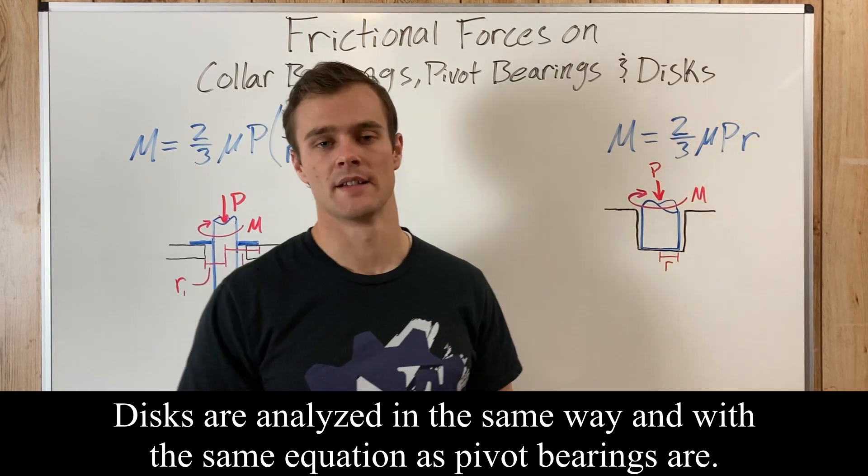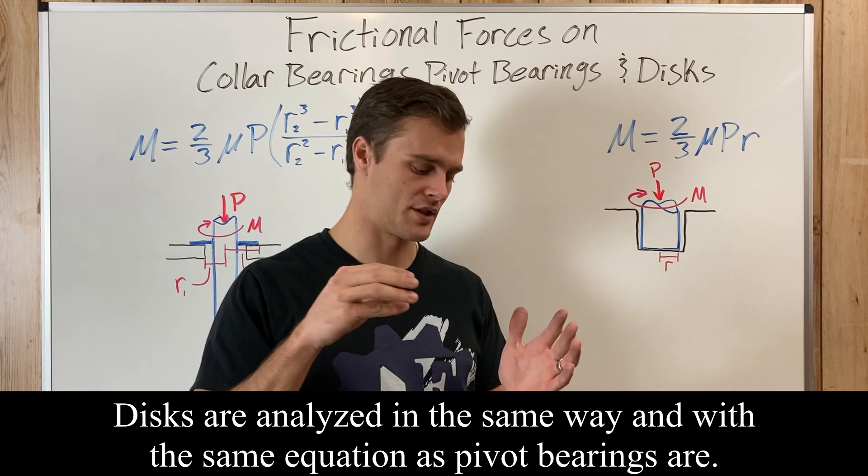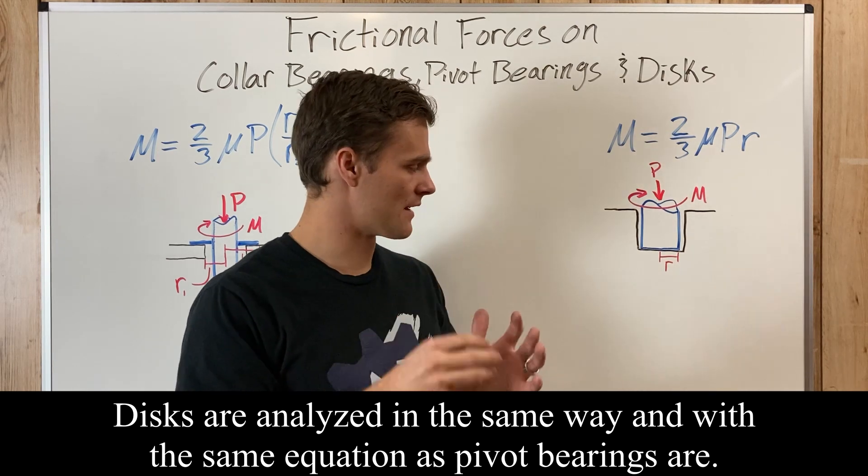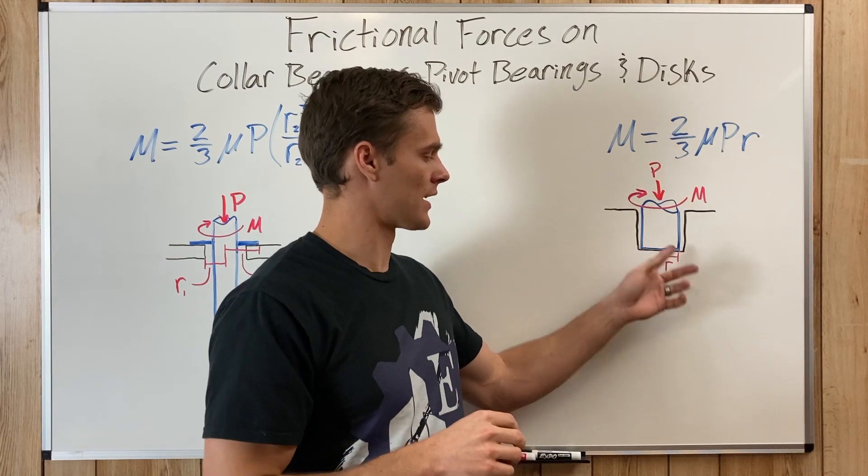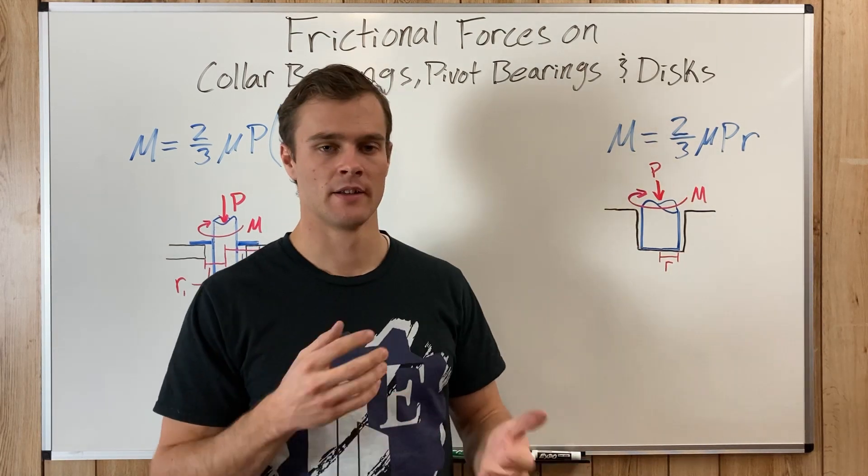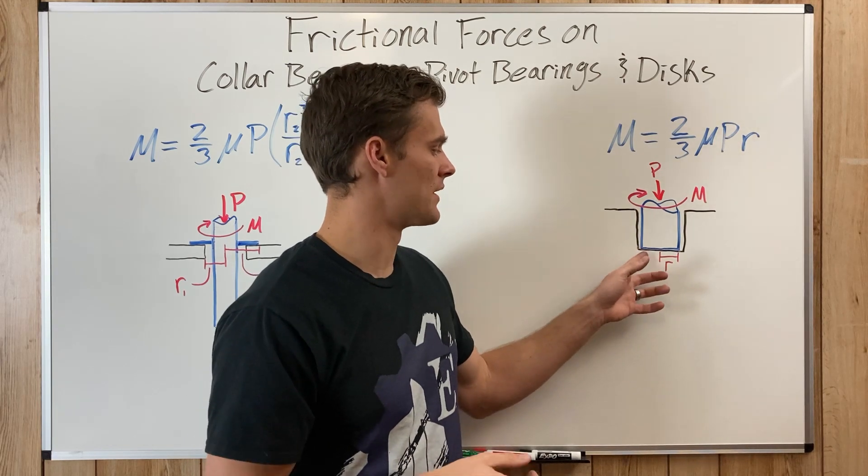Now, a pivot bearing is a bearing where the rod or the axle is just sitting in the end of the hole. But the edges of the axle of the rod aren't touching anything. There's no frictional forces there, it's just on the end of the rod.